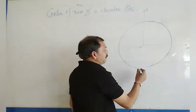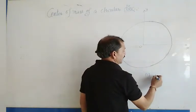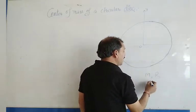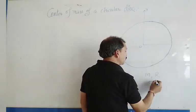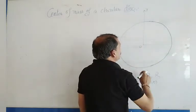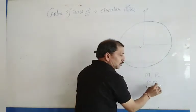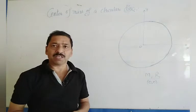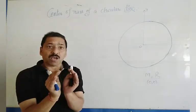The mass of the disk is M, its radius is R, and the geometric center is at (0, 0). This is the coordinate system.